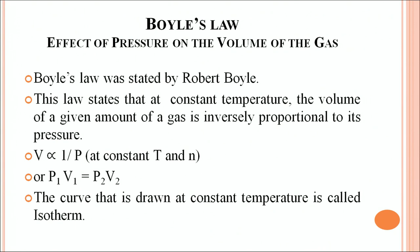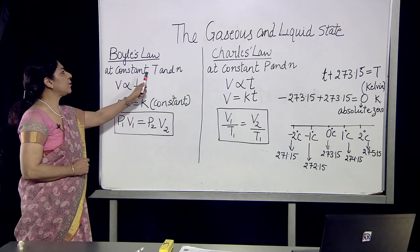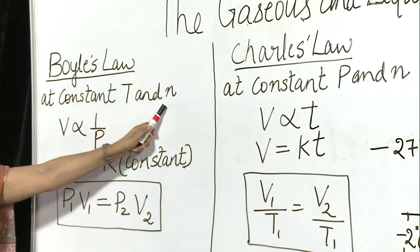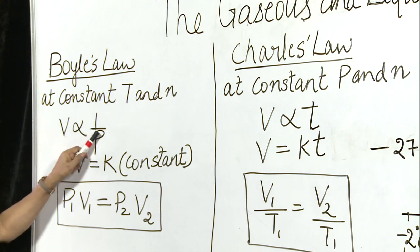Boyle's law is the effect of pressure on the volume of a gas. It was stated by Robert Boyle. This law states that at constant temperature, the volume of a given amount of gas is inversely proportional to its pressure. He kept temperature and number of moles constant, and checked the relation between volume and pressure, finding that volume is inversely proportional to pressure.